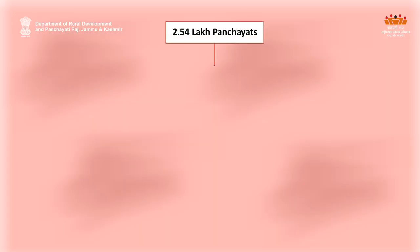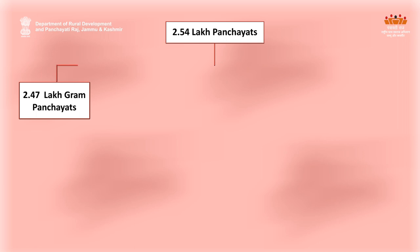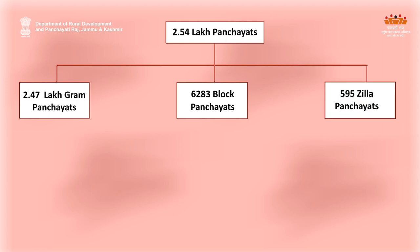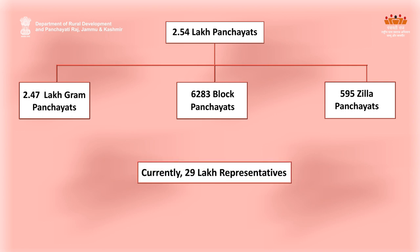There are 2.54 lakh Panchayats in our country, out of which 2.47 lakh are Gram Panchayats, 6,283 are Block Panchayats, and 595 are District Panchayats. There are over 29 lakh Panchayat representatives in the country.